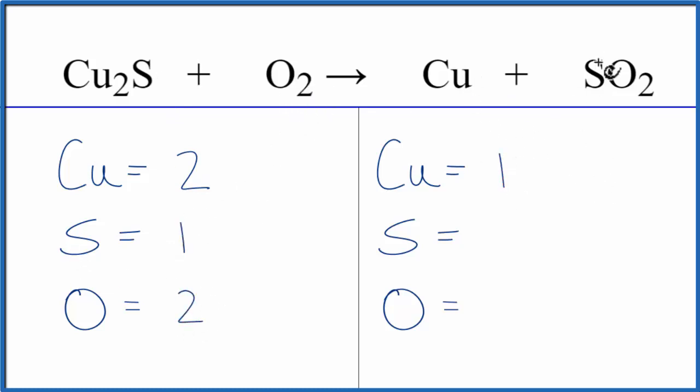On the product side of the equation, we have one copper, one sulfur, and two oxygens.